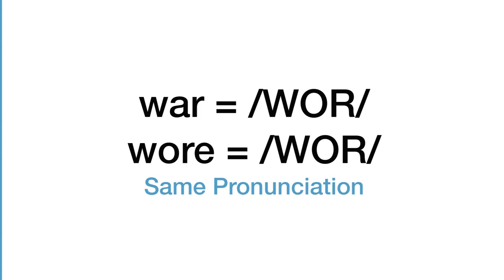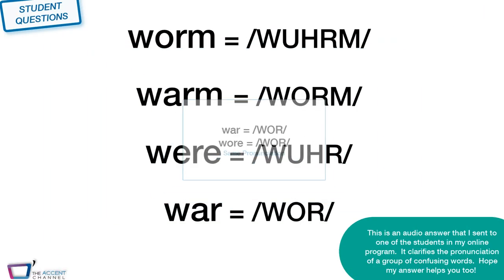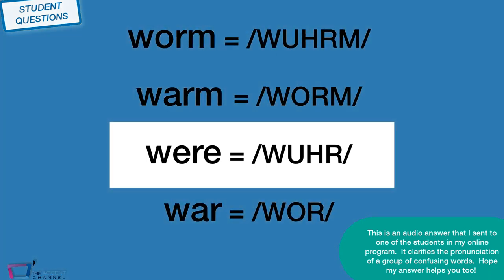W-A-R, war. W-O-R-E, wore. They're the same. I know it's crazy. I mean, how can anybody pronounce this stuff when there are all these tricks happening? And then your last word that you had asked about, were. It's spelled W-E-R-E, and it's pronounced with an R sound, were.